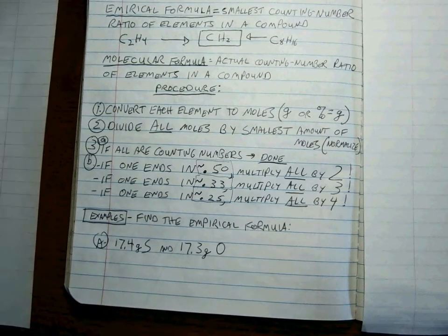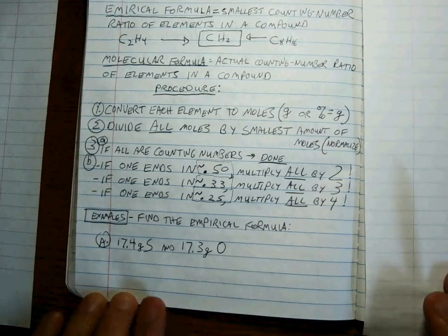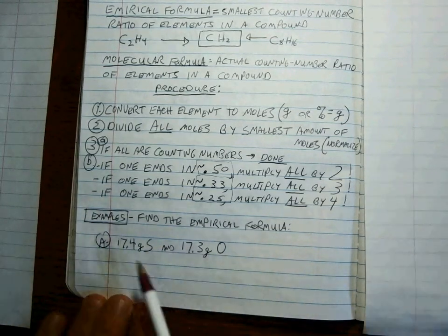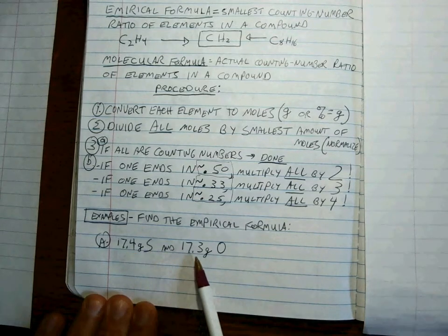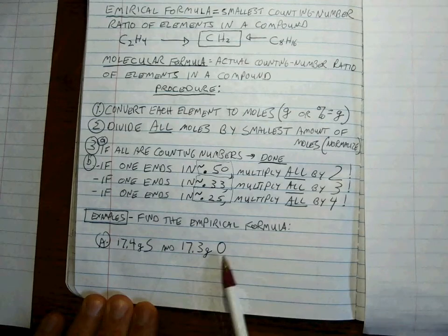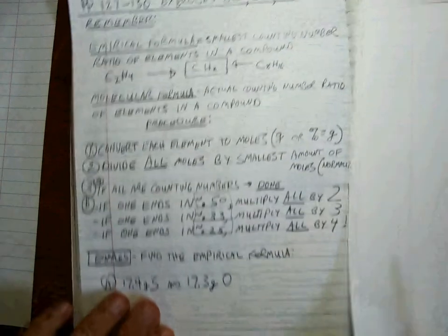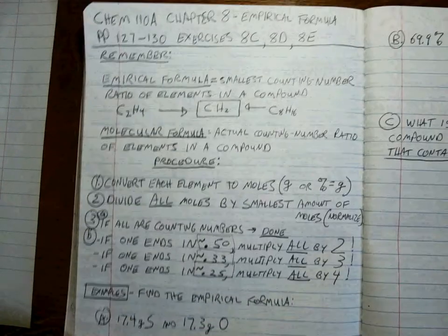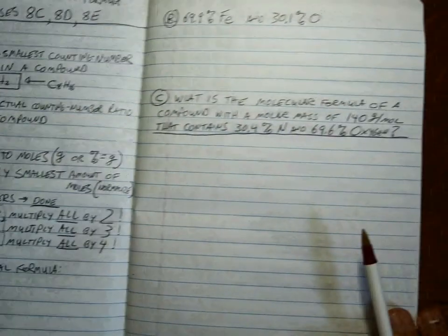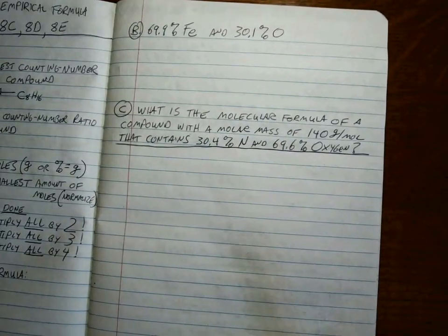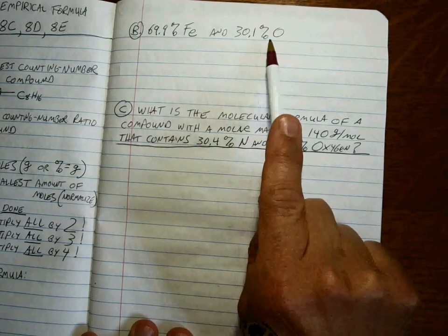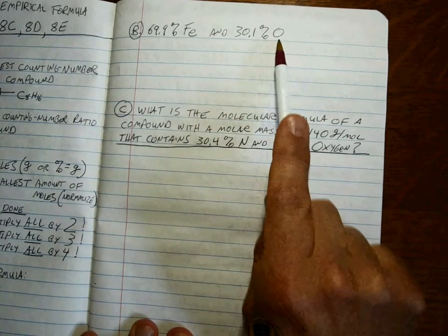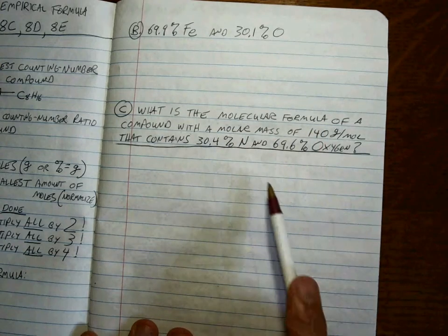All right, I have three different problems here. This is one. If we start with 17.4 grams of sulfur and 17.3 grams of oxygen in a compound, what's its empirical formula? And then the other two problems are these, 69.9% iron and 30.1% oxygen. And then we've got a molecular formula problem.